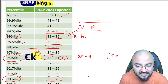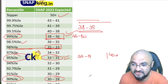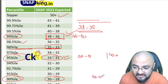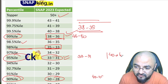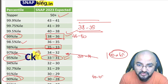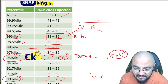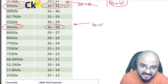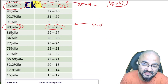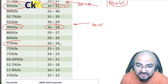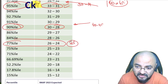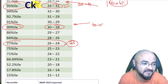The third target is 90 percentile, which is 28 to 30 marks. The attempt again needs to be around 40 to 45. If your accuracy is poor, you may land at 90 percentile even aiming for 95. And then the next target — 80 percentile — will be around 25 to 26 marks.